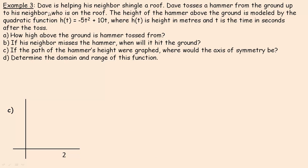Example 3: Dave's helping his neighbor shingle a roof and tosses a hammer up to the neighbor who's on the roof — not a very safe thing to do, but a good example of a quadratic function. The height of the hammer above the ground is modeled by h(t) = -5t² + 10t, where h(t) is the height in meters and t is the time in seconds after it's tossed.